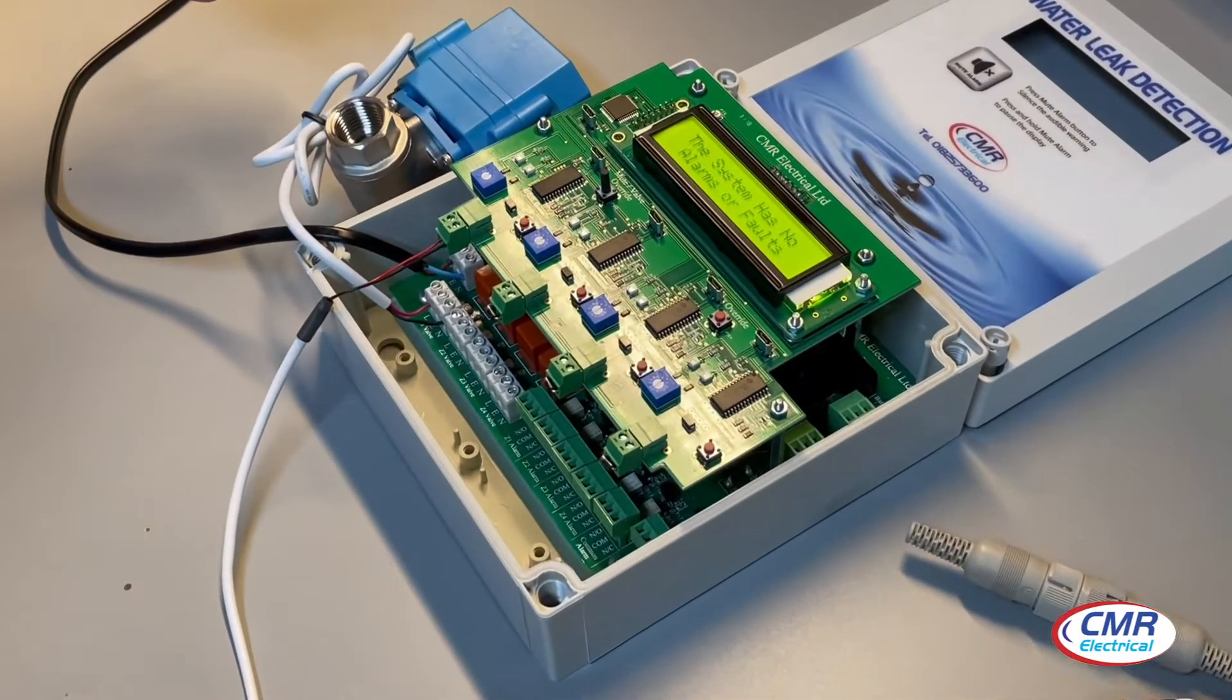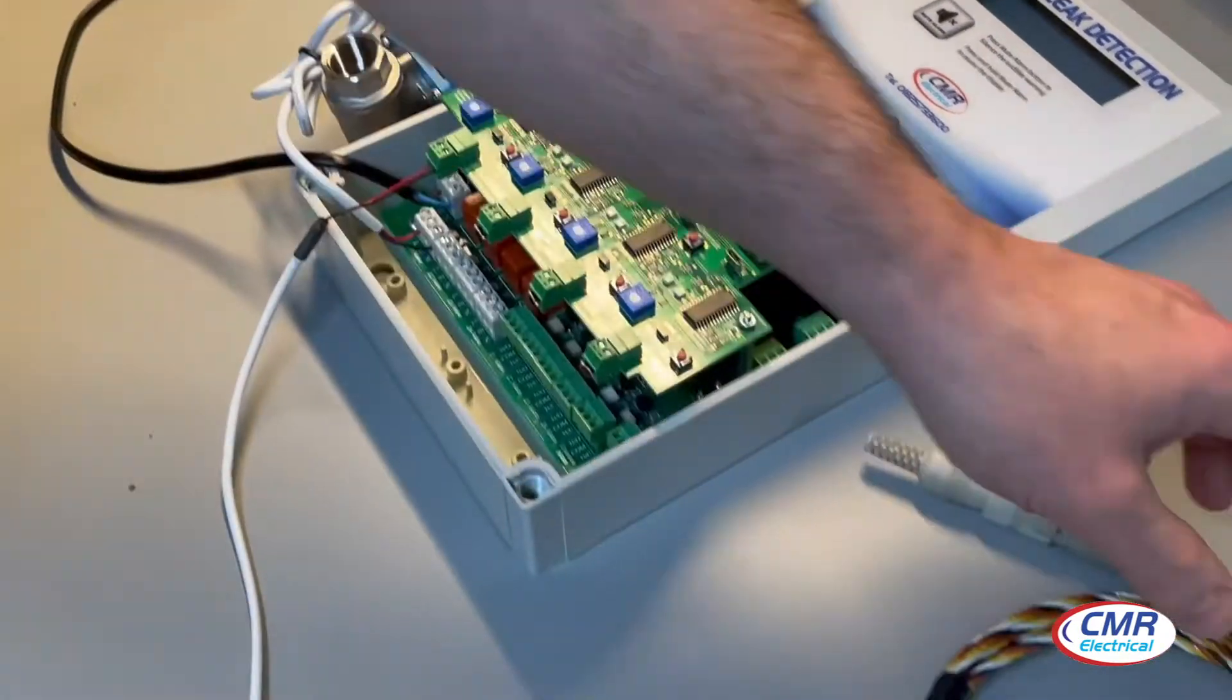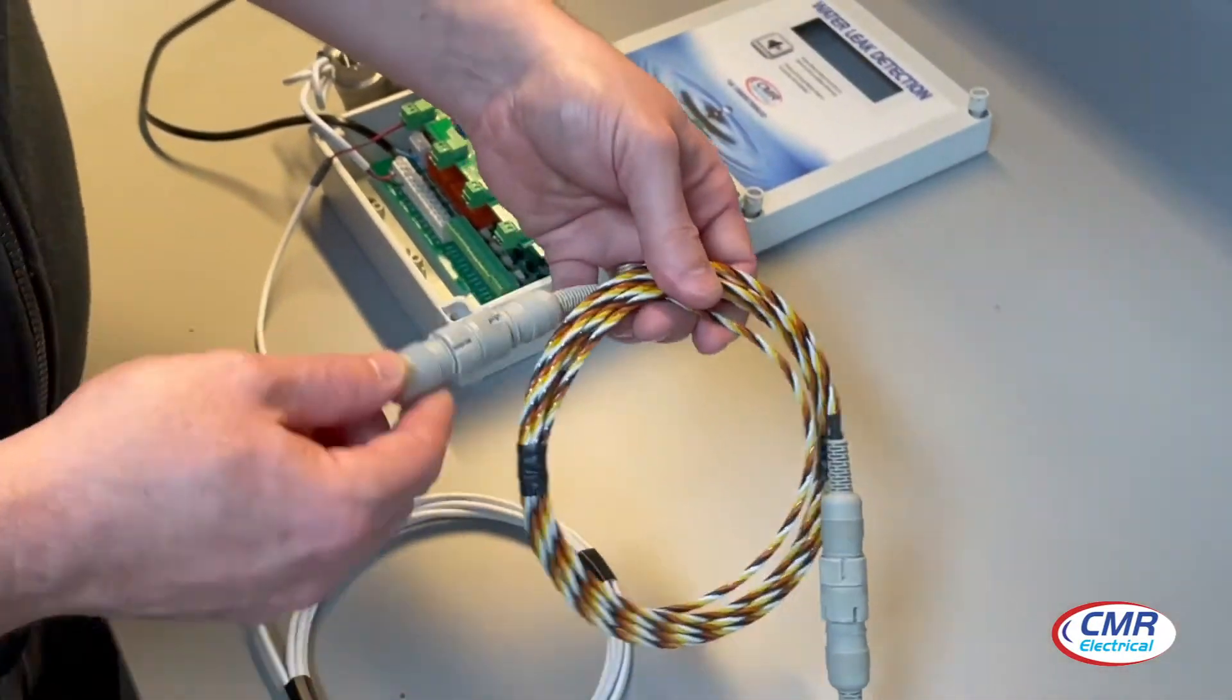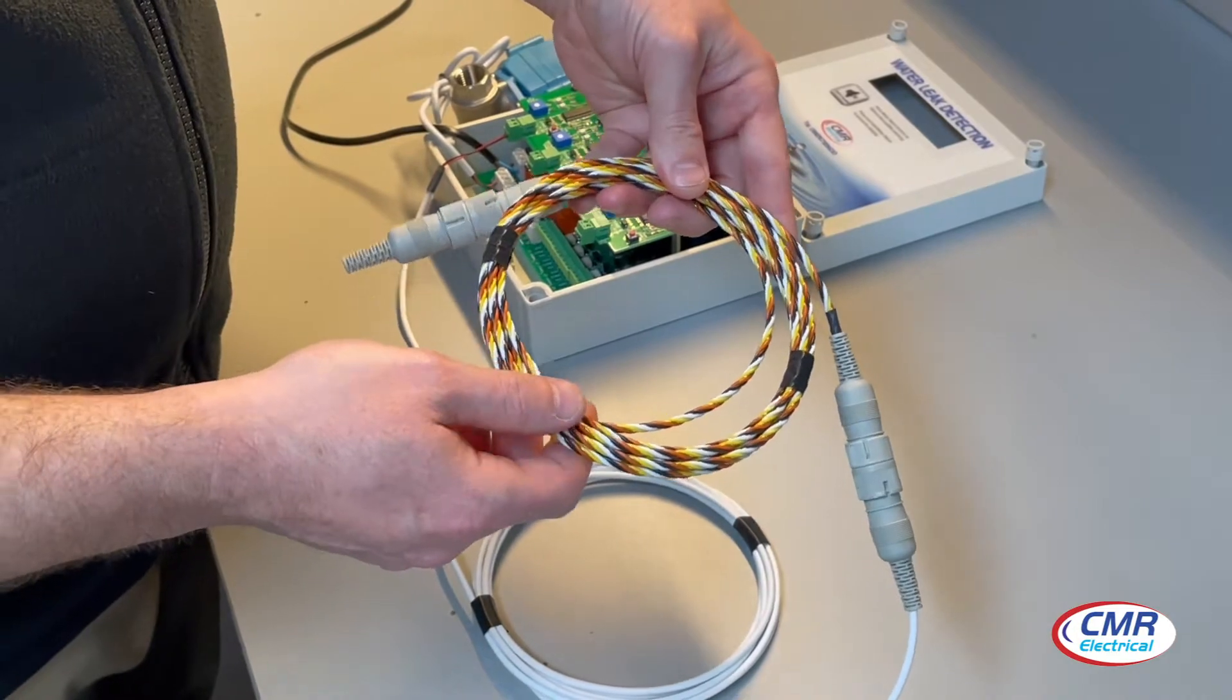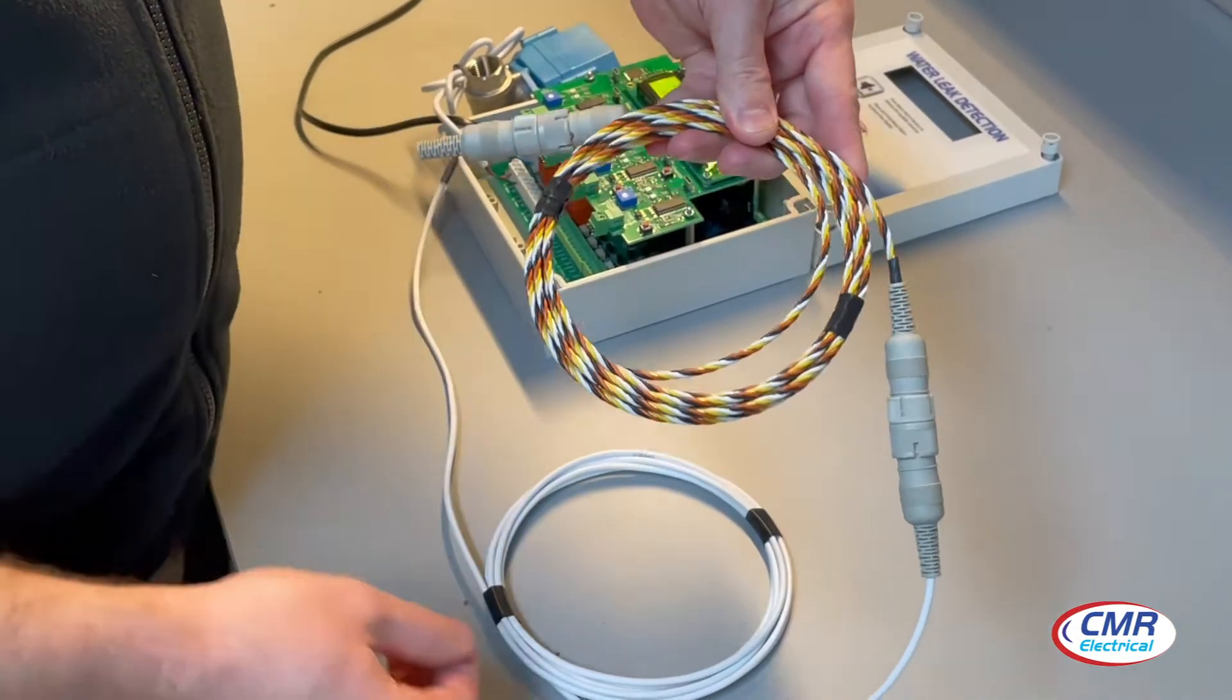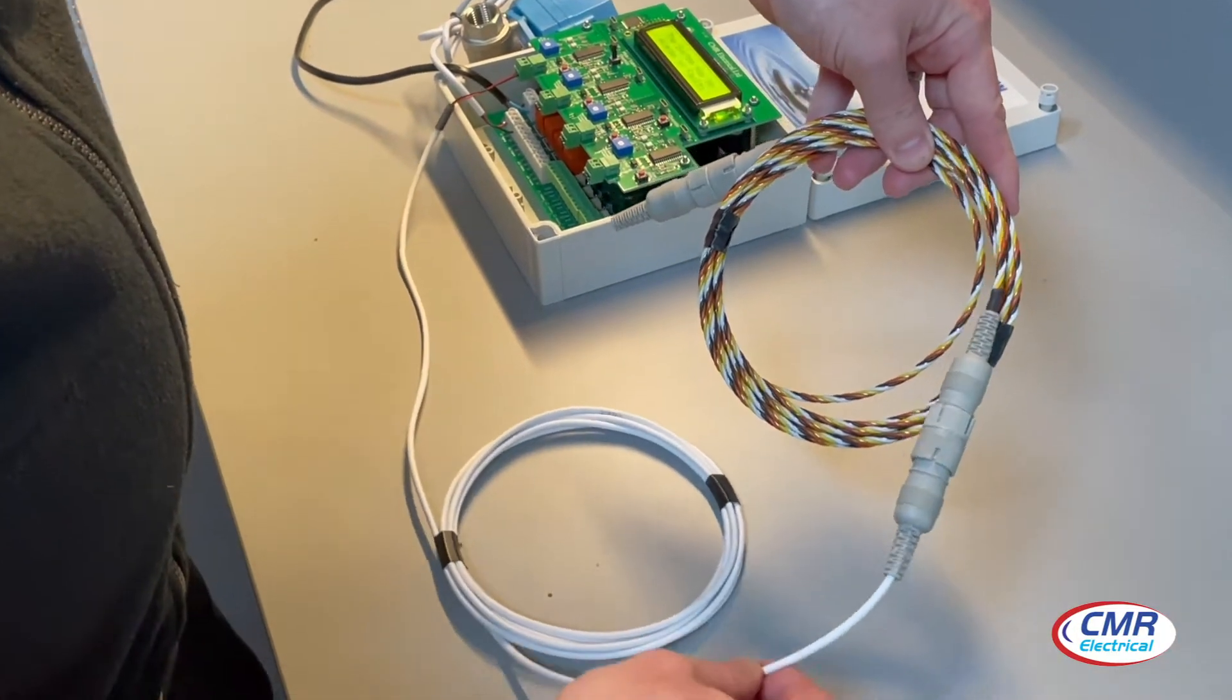We'll start off by talking about the water leak detection cable. This is a water leak detection cable. It's a multi-colored four core cable. At one end you'll have an end of line fitted, and at the other end it'll be connected to the signal cable.